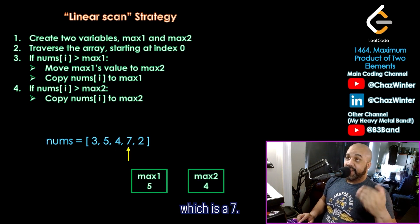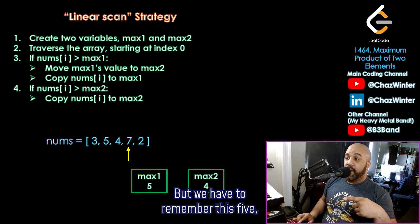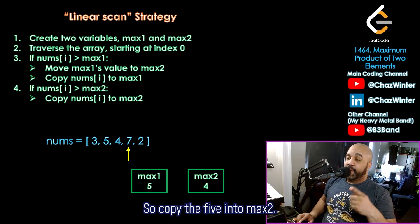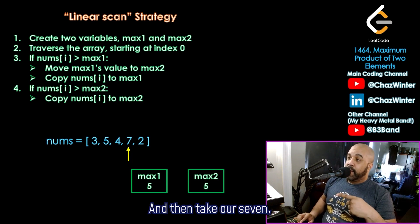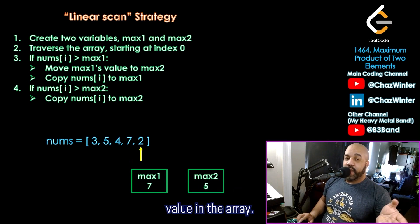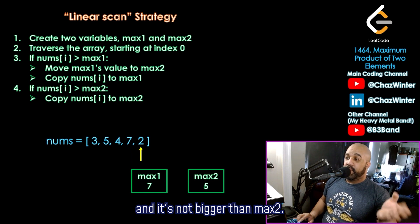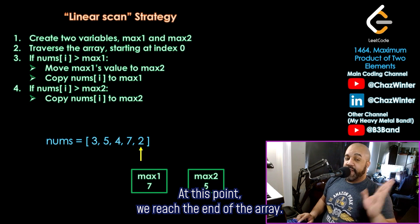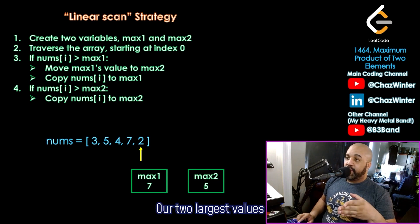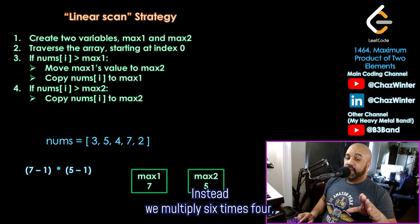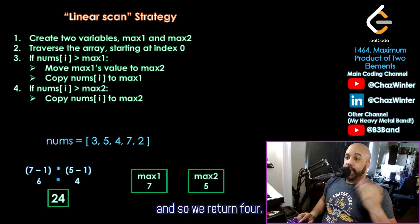So moving on to the next value, which is a seven, seven is greater than max one. So this should be our new first place value. But we have to remember this five because the five should now be in second place. So copy the five into max two, and then take our seven and copy it into max one. And then finally, we get to the last value in the array. It's not bigger than max one, and it's not bigger than max two. So we should just do nothing in this case. At this point, we reach the end of the array. Our two largest values are the seven and the five. We don't multiply seven times five. Instead, we multiply six times four. And so we return 24.